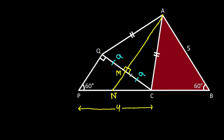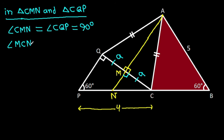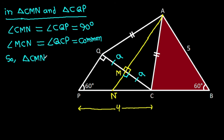This angle will be 90 degrees. Angle AMC is 90 degrees, and angle CMN is equal to angle CQP, that is 90 degrees. And angle MCN is equal to angle QCP, that is common. So triangle CMN will be similar to triangle CQP.